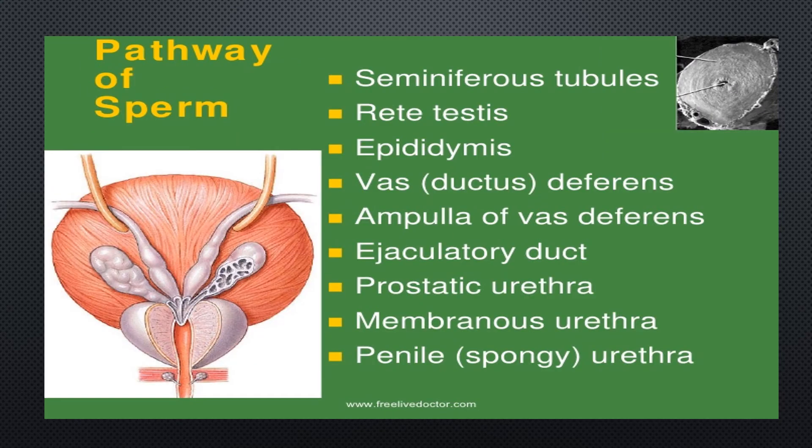The pathway of the sperm: first, sperm are produced in the seminiferous tubules within the 200–300 lobules, then pass to the rete testis, then the epididymis, then the vas deferens, then the ampulla of the vas deferens, then the ejaculatory duct, then the prostatic urethra, then the membranous urethra, then the penile urethra, and then out. If not ejaculated via the penile urethra, the sperm gets reabsorbed into the body.